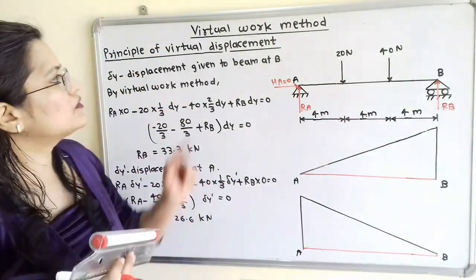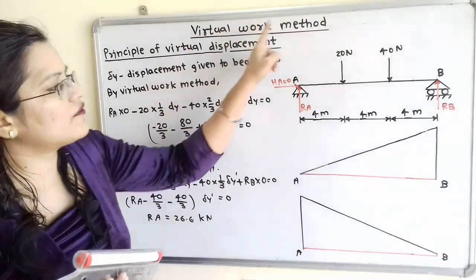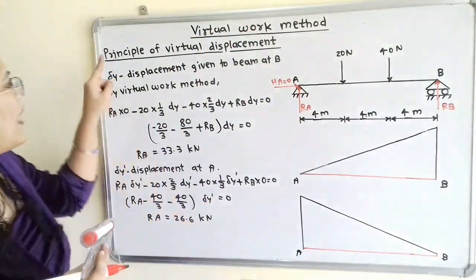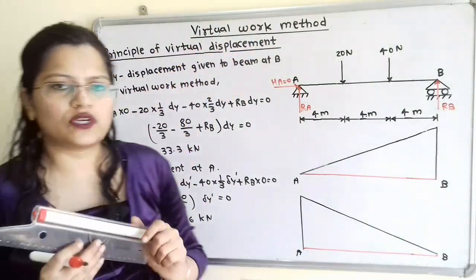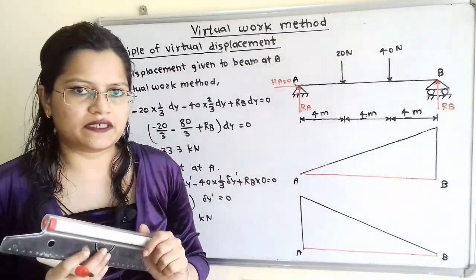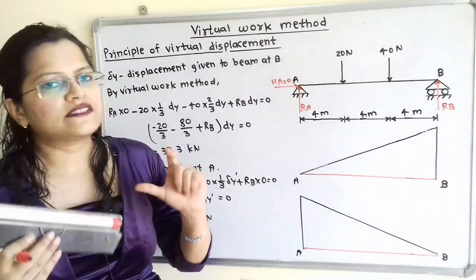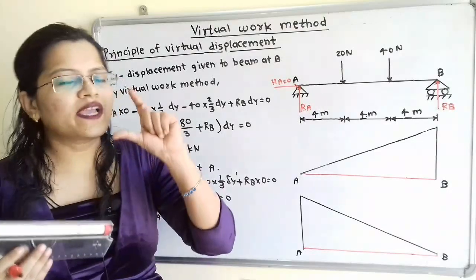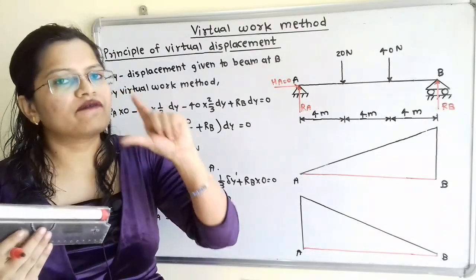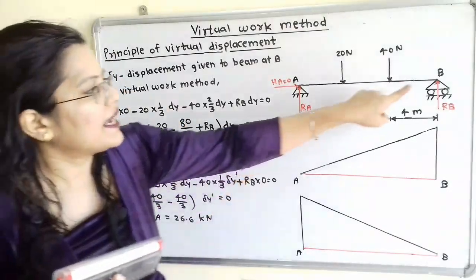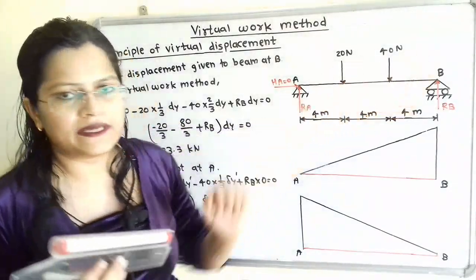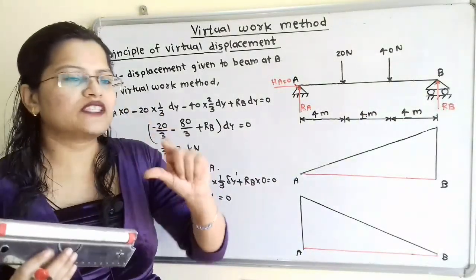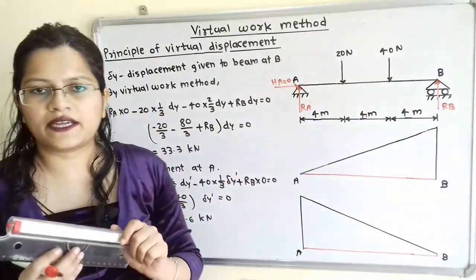We are going to use the virtual work method and apply the principle of virtual displacement. We have to give a very small displacement at end B, and in the second case, we have to give a very small displacement at end A.